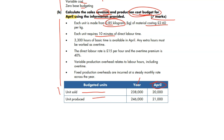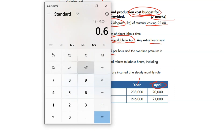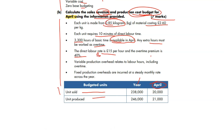Each unit requires 10 minutes of direct labour. 3,300 hours are available in April and any extra hours must be worked as overtime. The direct labour rate is £15 per hour, with overtime paid at 40% premium. So 15 × 0.4 = 6, giving an overtime rate of £21 per hour — basic £15 plus premium £6 equals £21. Variable production overhead relates to labour hours including overtime.